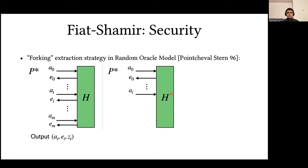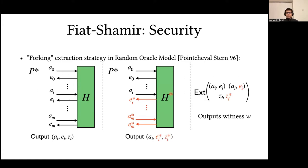The security of the Fiat-Shamir transformation is proven in the random oracle model with a so-called forking strategy, which involves running the prover twice and choosing a random point in its queries to the random oracle to fork its execution in some sense.